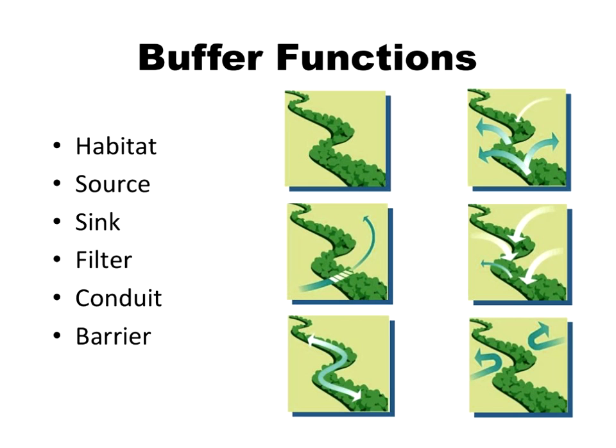Buffers can potentially provide many benefits to landowners and society by modifying landscape functions. This slide presents a simple typology of functions that buffers could provide. The obvious one is habitat. Source could be a source of marketable products — non-timber forest specialty products or plant propagules. A sink could be for pollutants or carbon. Filter could mean filtering phosphorus. Or a conduit for wildlife or even pedestrians. And then there is the barrier function.